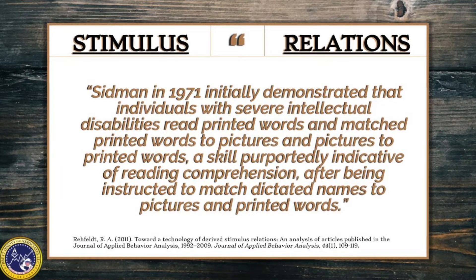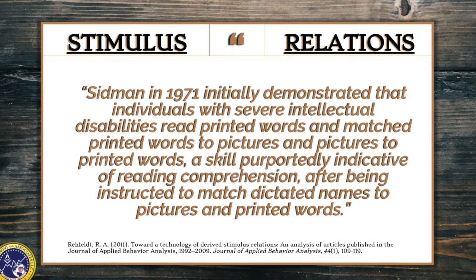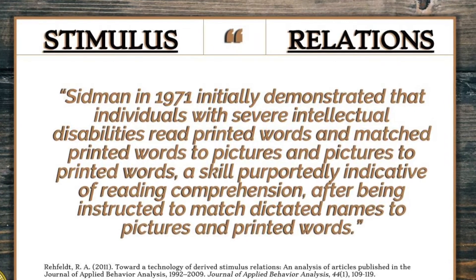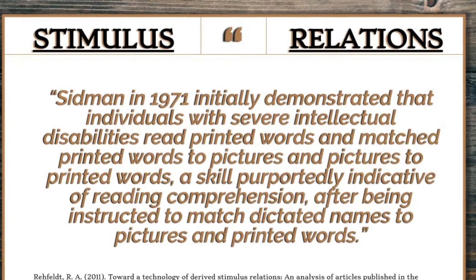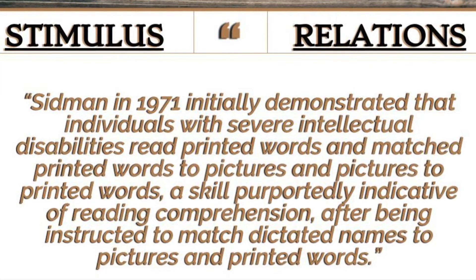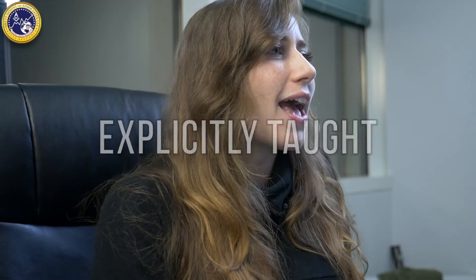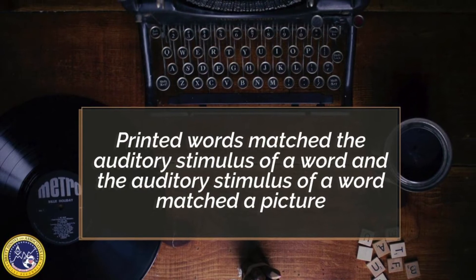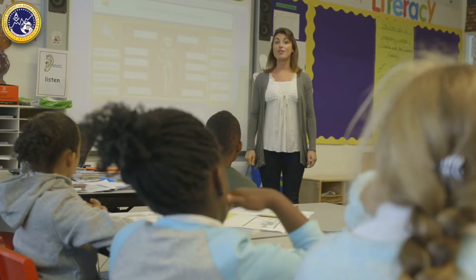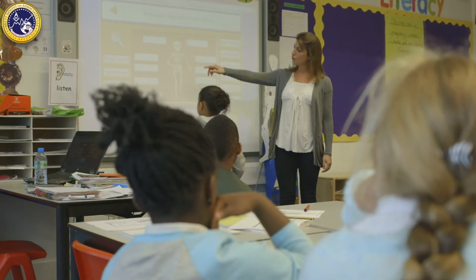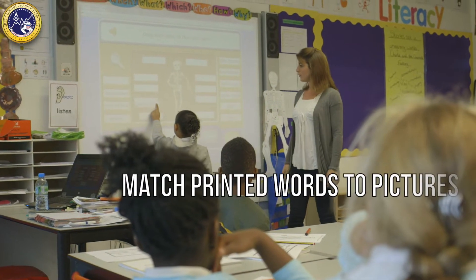Ruth Ann Raefelt, citing Sidman in 1971, initially demonstrated that individuals with severe intellectual disabilities could read printed words and match printed words to pictures and pictures to printed words — a skill purportedly indicative of reading comprehension — after being instructed to match dictated names to pictures and printed words. To break that down: after having been explicitly taught that printed words matched the auditory stimulus of a word, and the auditory stimulus of a word matched a picture, those students were able to match the printed word with no formal similarity, and matched printed words to pictures, without having ever been explicitly taught.